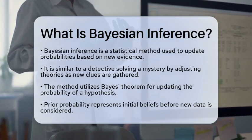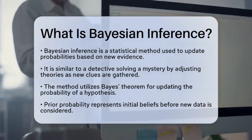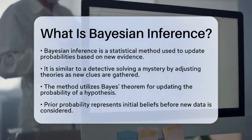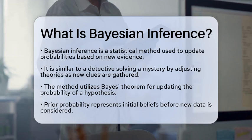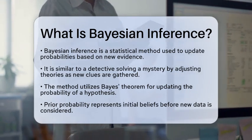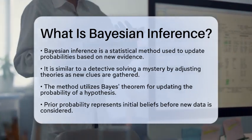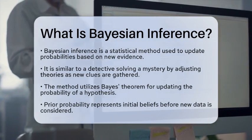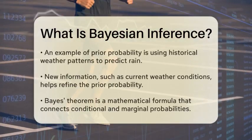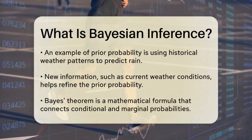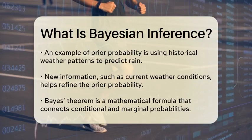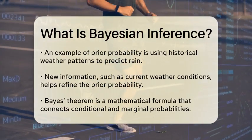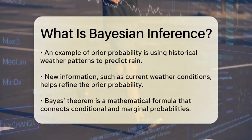Bayesian inference is a method of statistical inference in which Bayes' theorem is used to update the probability for a hypothesis as more evidence or information becomes available. It combines prior knowledge, represented as a prior probability, with new data to produce a revised probability, known as the posterior probability.